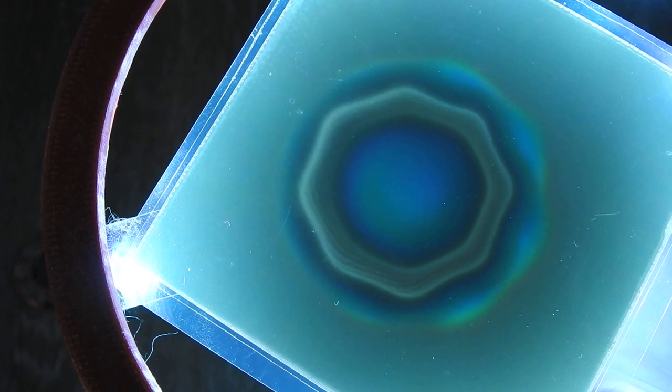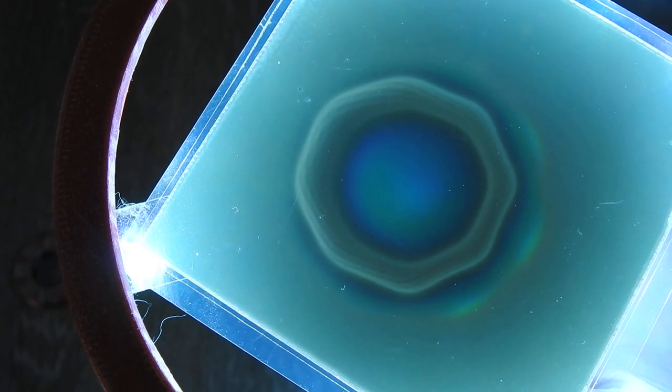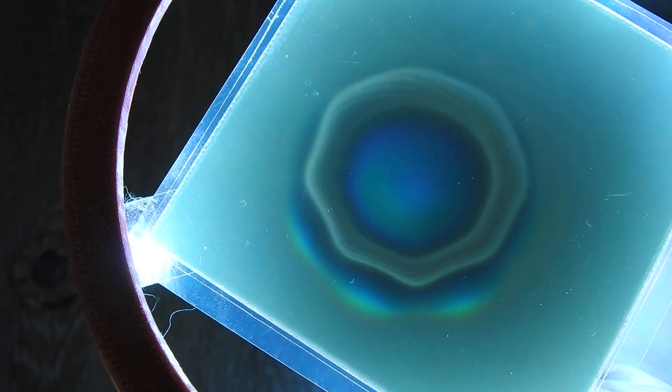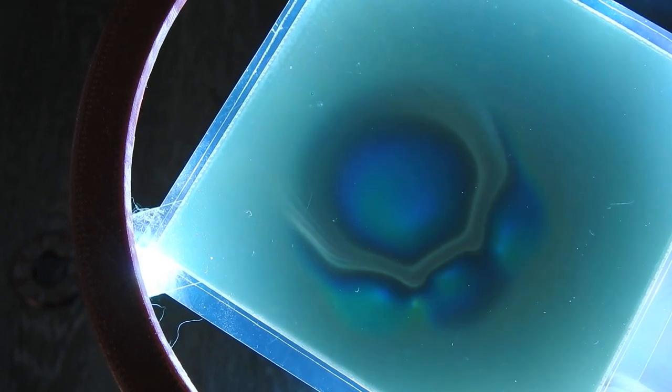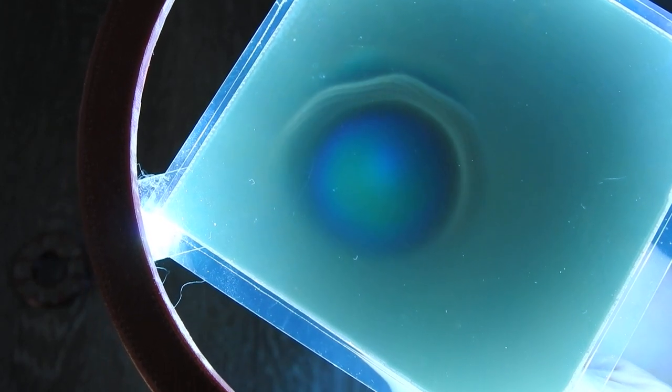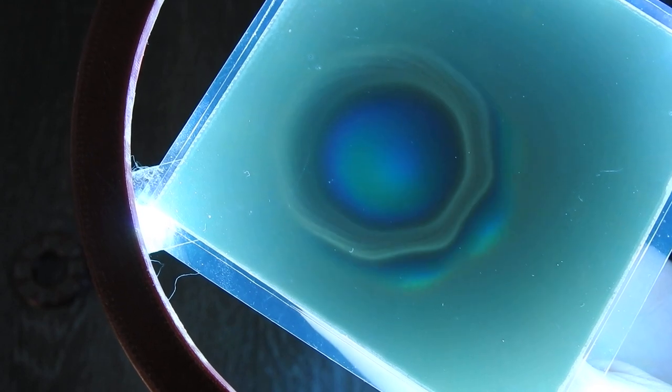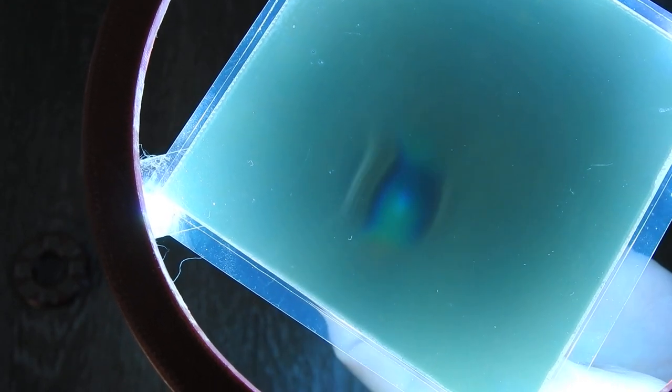You can see these white lines and the pattern it forms. Now I will just rotate it a bit. We have a strong north pole at the center, and on the sides here we have south poles.